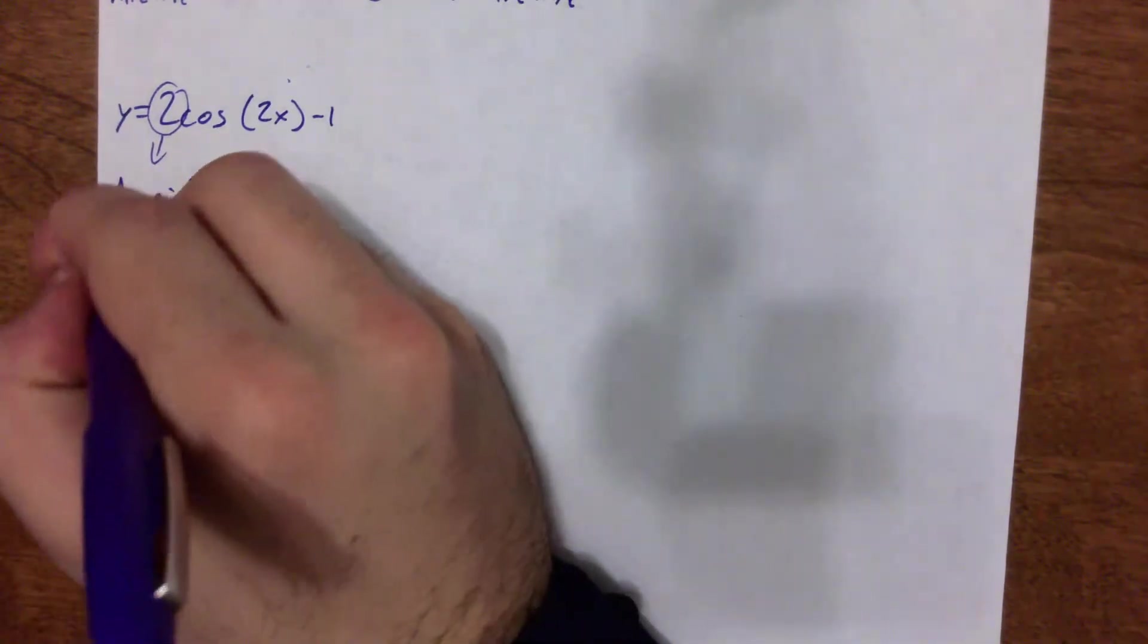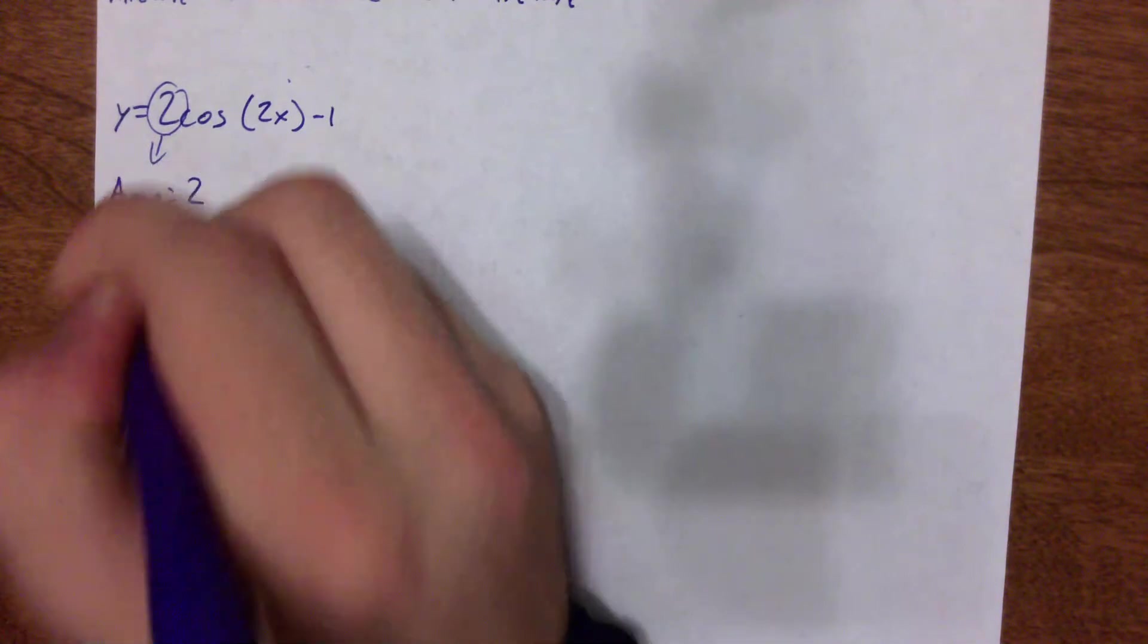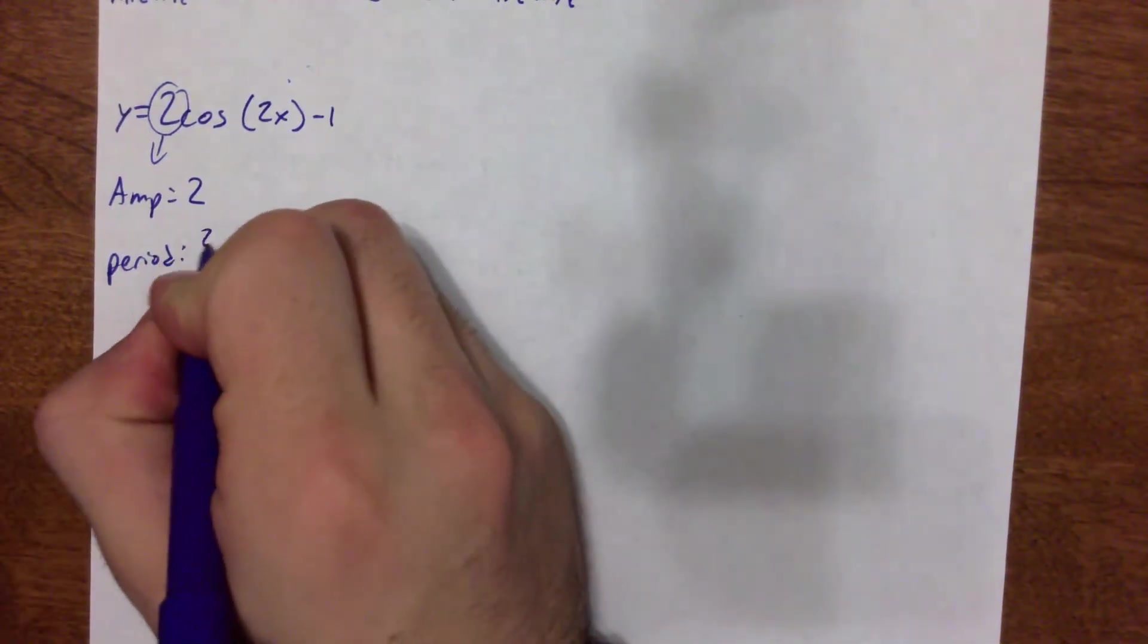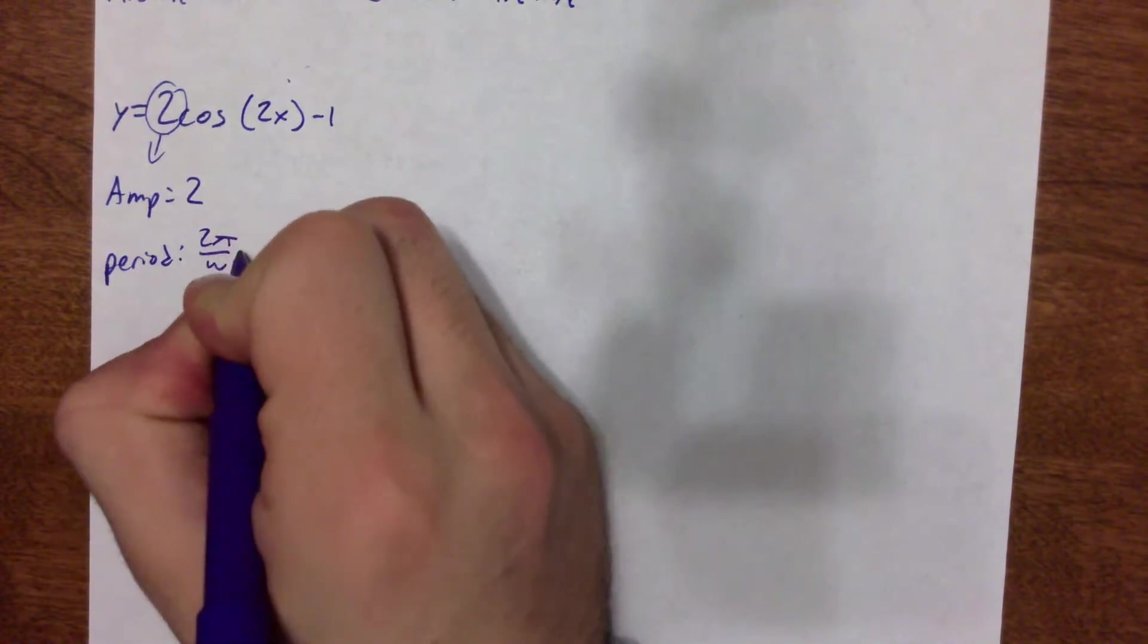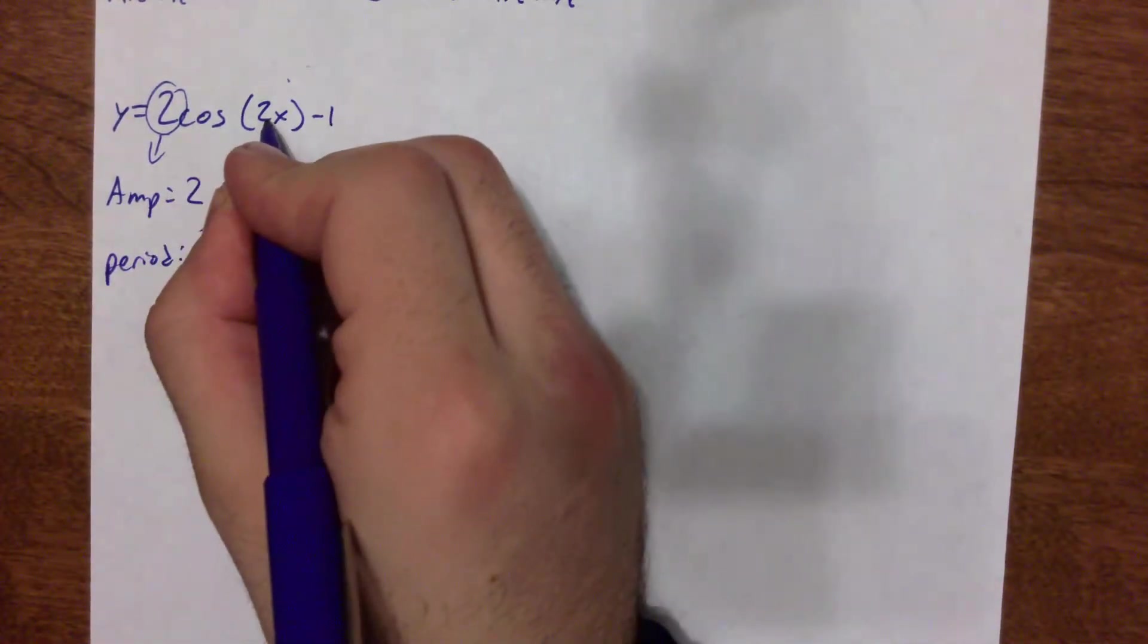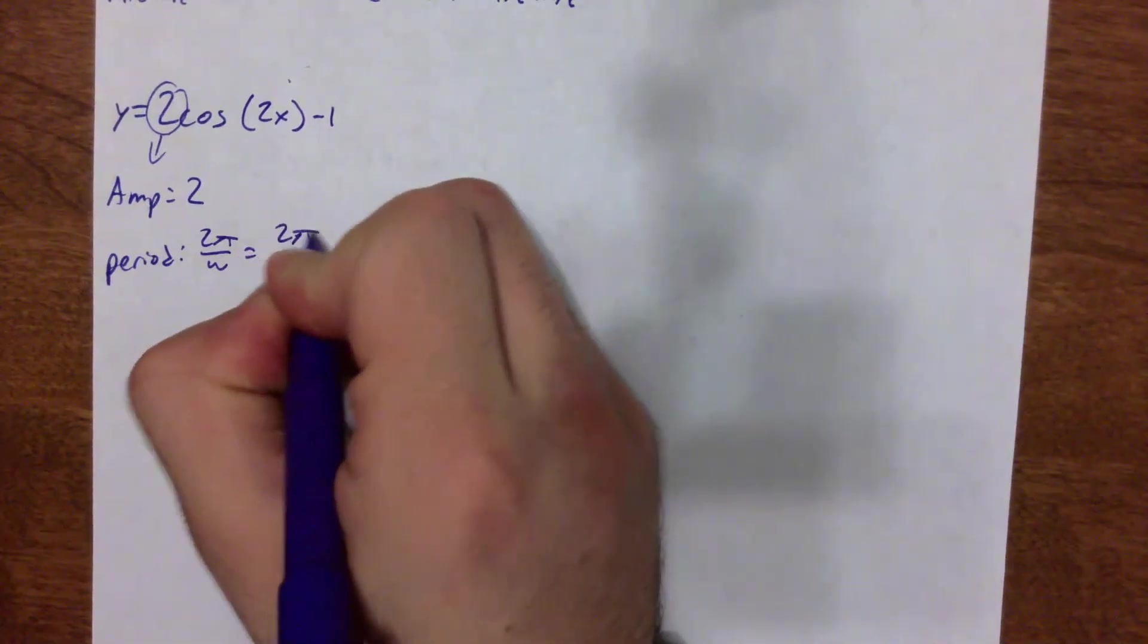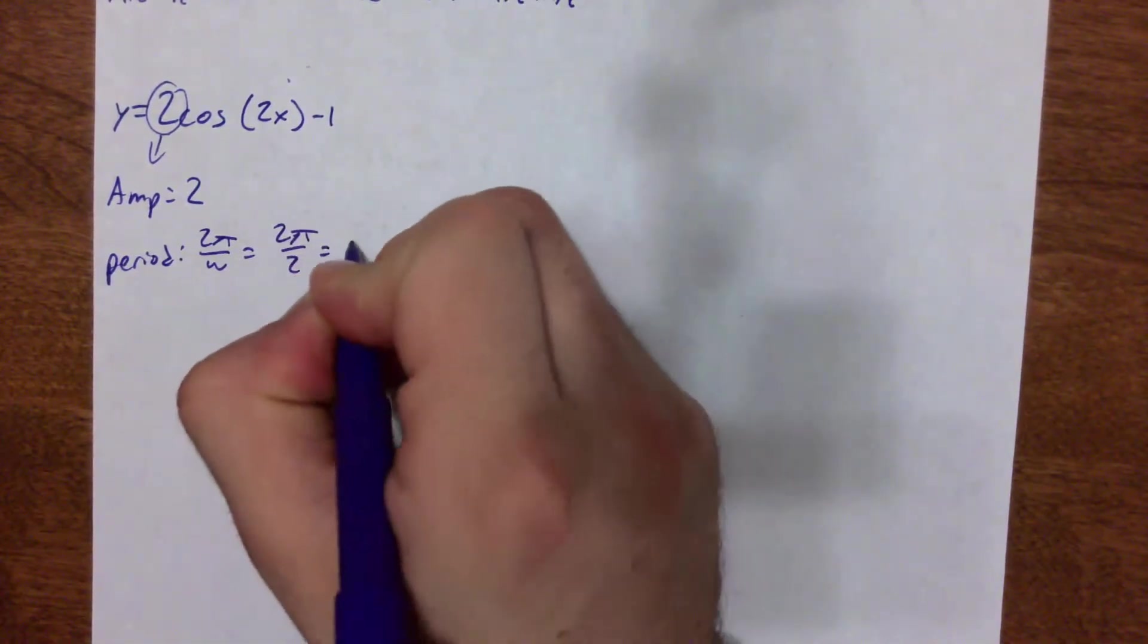To find my period, I take the original period, and the period of cosine is 2π divided by w. Again, w is that number in between the parentheses, so 2π over 2, which means my new period is π.